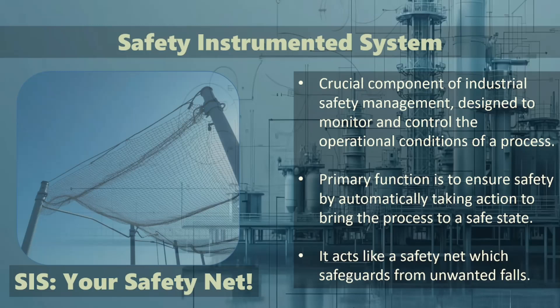This could involve shutting down equipment, isolating hazardous substances, or activating emergency systems to prevent accidents such as leaks, fires, or explosions. In simple terms, think of SIS as your personal safety net, ready to catch you if something goes wrong. It's designed to take a process to a safe state when certain conditions are met, like an emergency shutdown system.